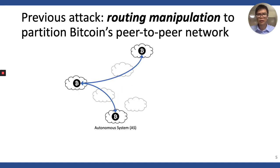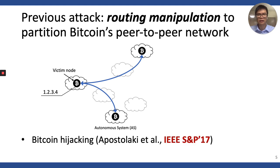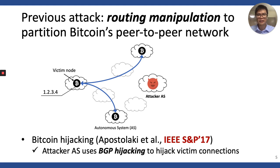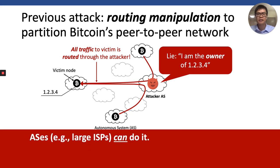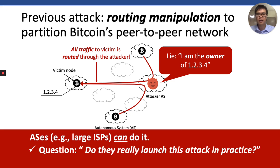There is one powerful partitioning attack presented at Oakland 2017 called the Bitcoin hijacking attack. The attacker controls an autonomous system and uses the well-known BGP hijacking to hijack the prefix of the victim node, and hence all the traffic coming through the victim is routed through the attacker. As a result, the attacker can isolate one Bitcoin node or partition multiple nodes at the same time. This demonstrates that large ISPs can easily partition the Bitcoin network, but the question is: do they really carry out this attack in practice? Interestingly, we haven't seen any such partitioning attacks in practice.